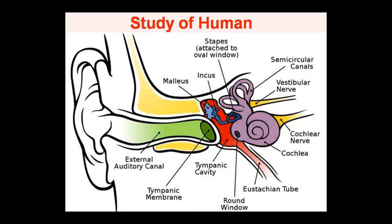We have named all four parts. Now we will discuss each one in a little detail, and then study them in depth. Let's start with what the external and outer ear is made of.